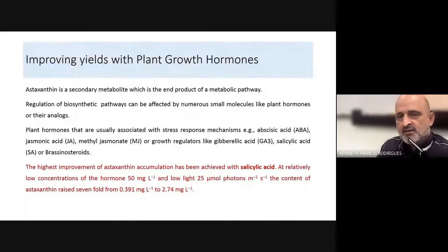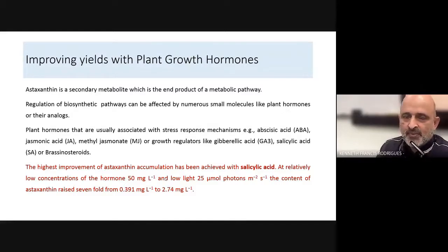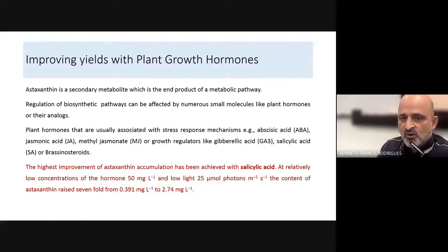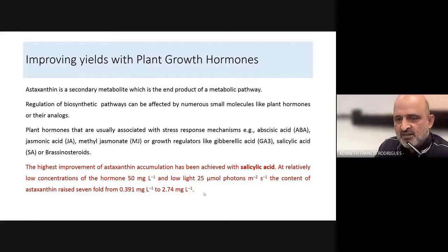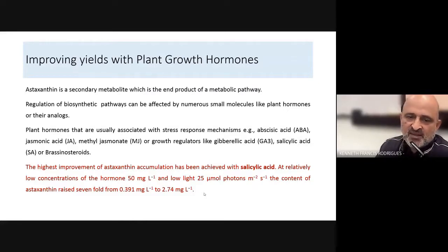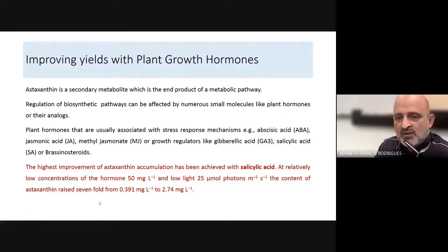Some industrial producers have utilized plant growth hormones such as jasmonic acid, abscisic acid, methyl jasmonate, gibberellic acid, or salicylic acid to improve astaxanthin production. However, the addition of plant growth hormones in industrial systems entails additional cost, which can be a limiting factor. One of the cheapest methods may be the usage of salicylic acid, which is functional at low concentration and can induce astaxanthin production. Research with plant growth hormones is ongoing, as certain hormones may be effective at very low concentrations — for example, salicylic acid at 50 milligrams per liter produces a seven-fold increase in astaxanthin production.